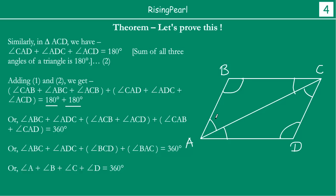So we have seen that angle A plus angle B plus angle C plus angle D — all four angles put together — will be 360 degrees. This is what we wanted to prove: the sum total of all 4 angles of a quadrilateral is equal to 360 degrees. We have proved what we started out trying to prove. This is how we can tell that the sum of all internal angles of a quadrilateral will always be equal to 360 degrees.